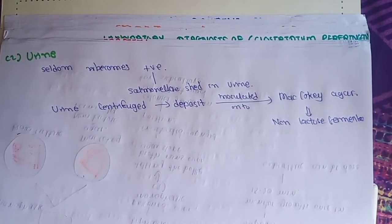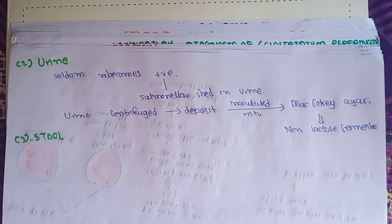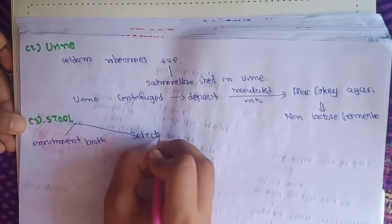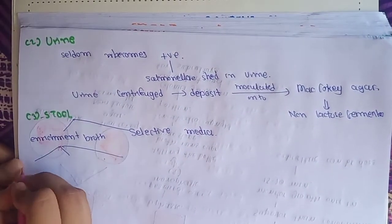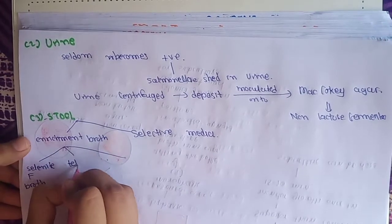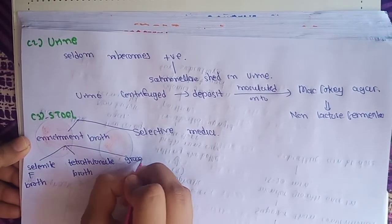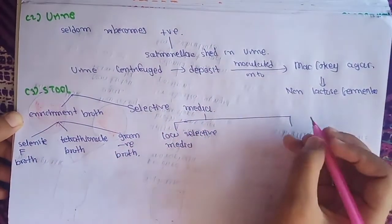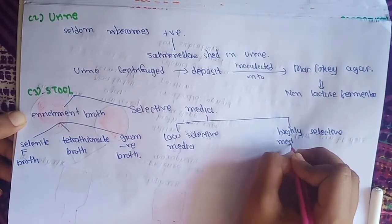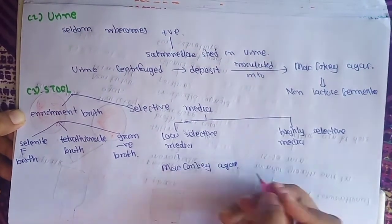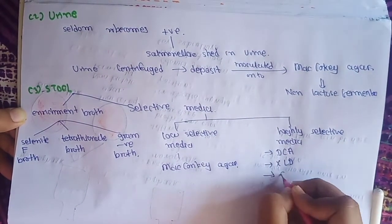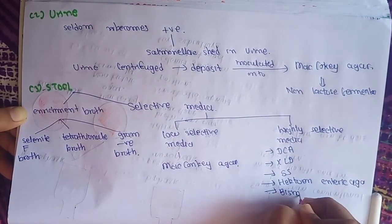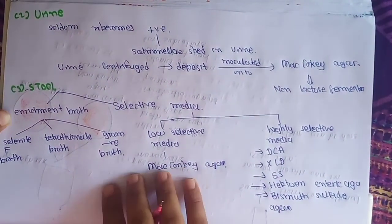For stool culture: since stool contains commensals, we use enrichment broth and selective media. Enrichment broths include selenite F broth, tetrathionate broth, and gram-negative broth. Selective media are divided into low-selective media — MacConkey agar — and highly selective media including DCA (deoxycholate citrate agar), XLD (xylose lysine deoxycholate), Shigella-Salmonella (SS) agar, Hektoen enteric agar, and bismuth sulfide medium.